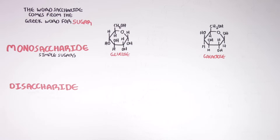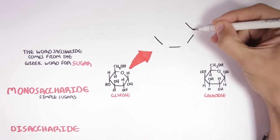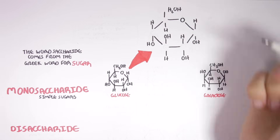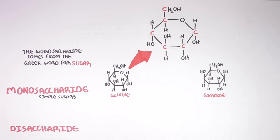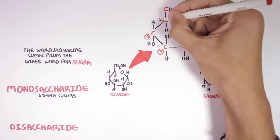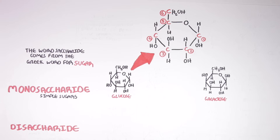Let's look at glucose first, which you all probably have heard of. Glucose is the main source of energy for humans. Here you can see glucose in its cyclic chemical form. What's important to know is that glucose contains six carbon atoms, labeled one through six in a specific order.